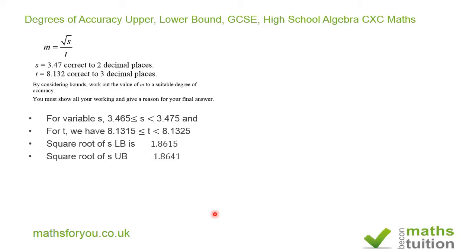We now need to find the M upper bound, and that means taking the upper bound for the square root of S divided by the lower bound of T. So we have M_UB equals 1.8641 divided by 8.1315, and we get the value of 0.2292.